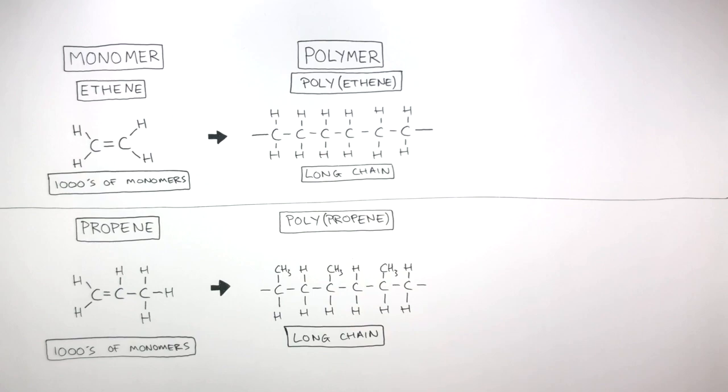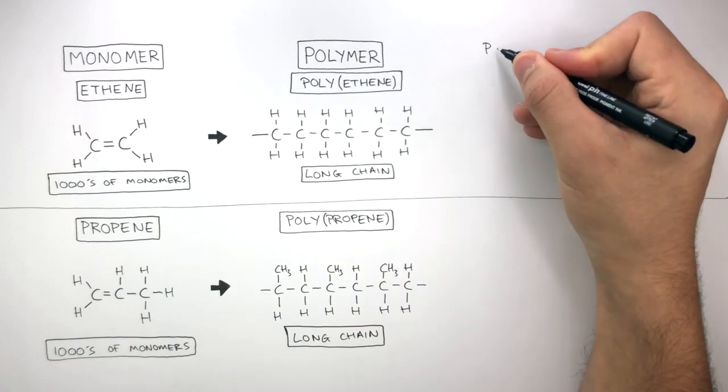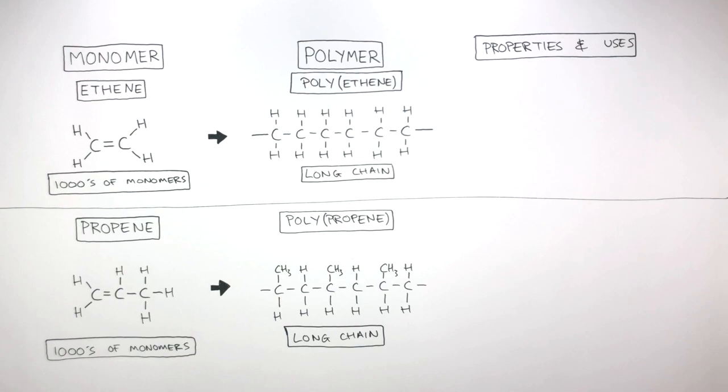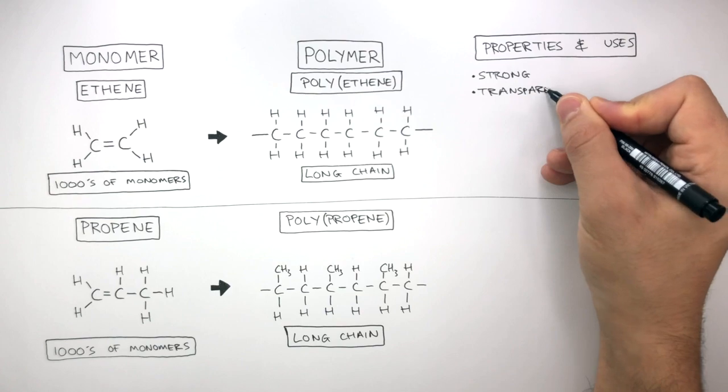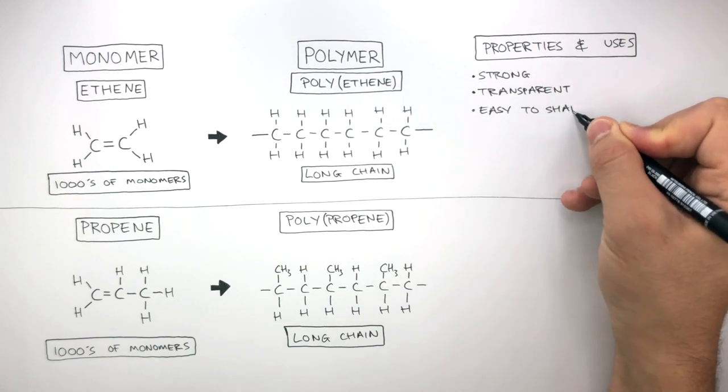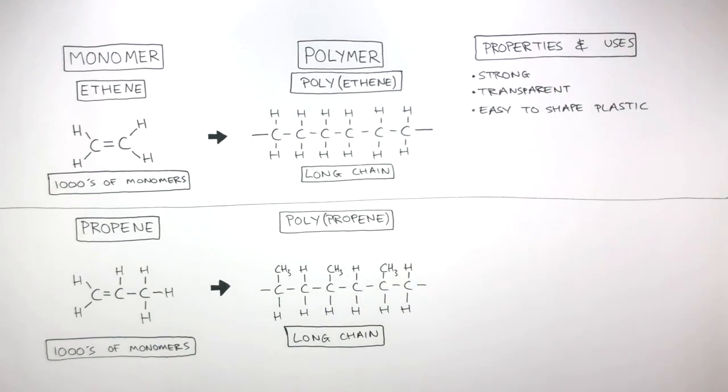Now you need to be able to remember the properties and uses of each polymer. The polymer polyethene is strong, transparent, and is an easy to shape plastic, so it can be used as bags, bottles, and bins.